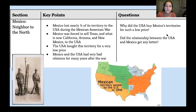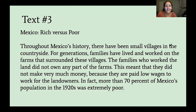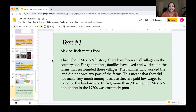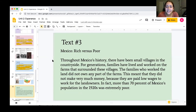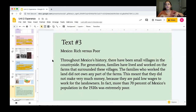Now we're going to read our last text, called Mexico — Rich versus Poor. Throughout Mexico's history, there have been small villages in the countryside. A village is like a small community that people live in. For generations, families have lived and worked on the farms that surround these villages. The families who worked the land did not own any part of the farms. This meant that they did not make very much money because they were paid low wages to work for the landowners. In fact, more than 70 percent of Mexico's population in the 1920s were extremely poor.